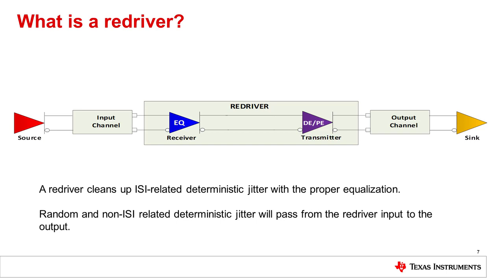Re-drivers can only clean up inter-symbol interference, or ISI, related deterministic jitter when it properly compensates for the channel loss through its equalizer function. Any under or over equalization would result in additional deterministic jitter. Furthermore, any random and non-ISI related deterministic jitter will pass from the re-driver input to the output.